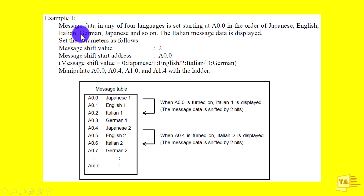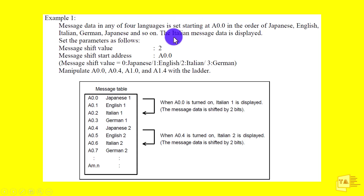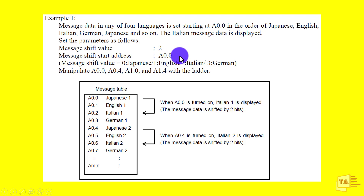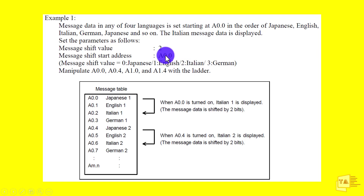Here is one example. Message data in four languages is set starting at A0.0 in the order: Japanese, English, Italian, German — and so on. The Italian message data is displayed in this example. We are going to set the parameters like this: message shift value is 2 and message shift start address is A0.0. Whenever A0.0 is turning on, it will shift two addresses — two bits — and land on the Italian message, which will be displayed on the CNC screen.